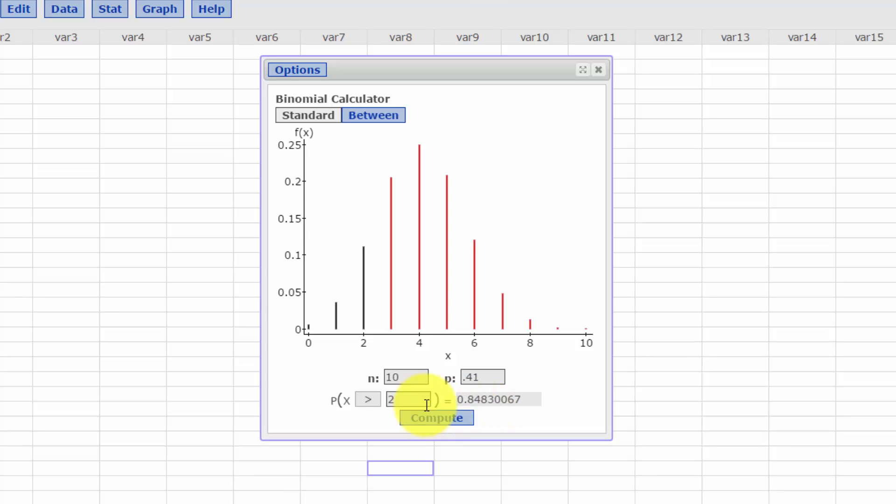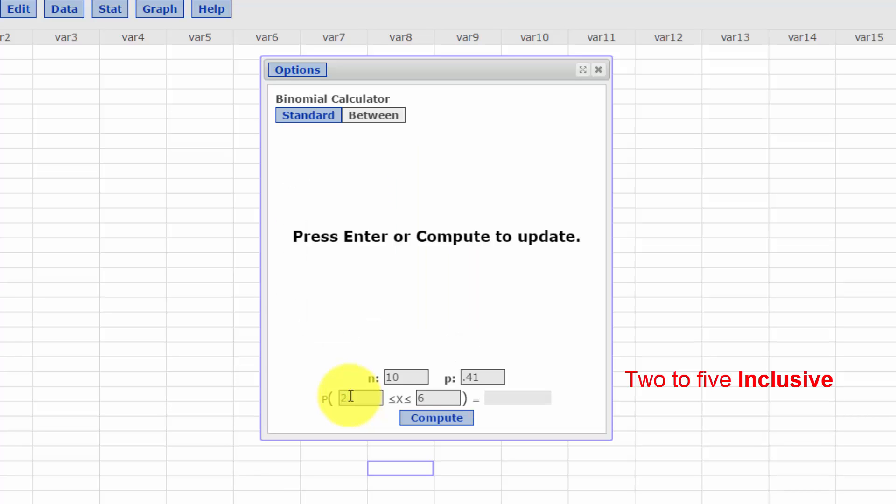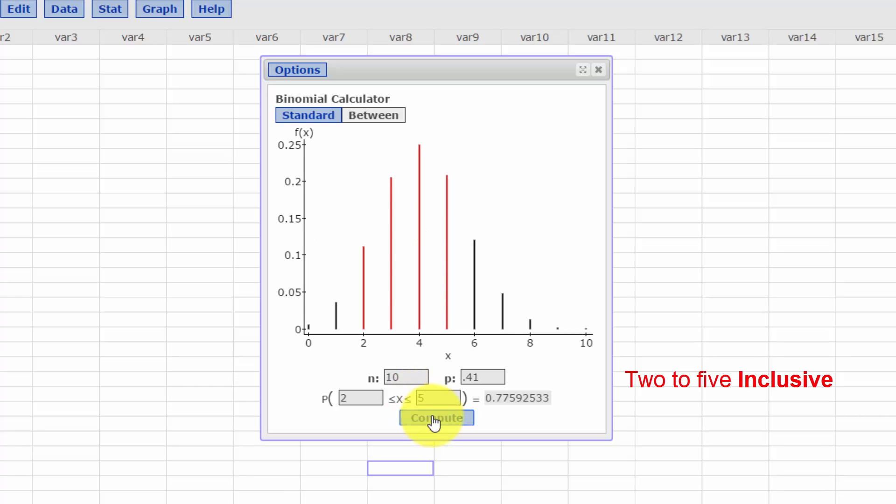The last part of the question is between two and five. So this time we click on our between portion of the calculator, leave everything else the same, and we're going to put two and five, click compute. We can see between two and five—that doesn't include one, it does include six, seven, eight, nine, ten, etc.—is 77.6%, or 0.776.